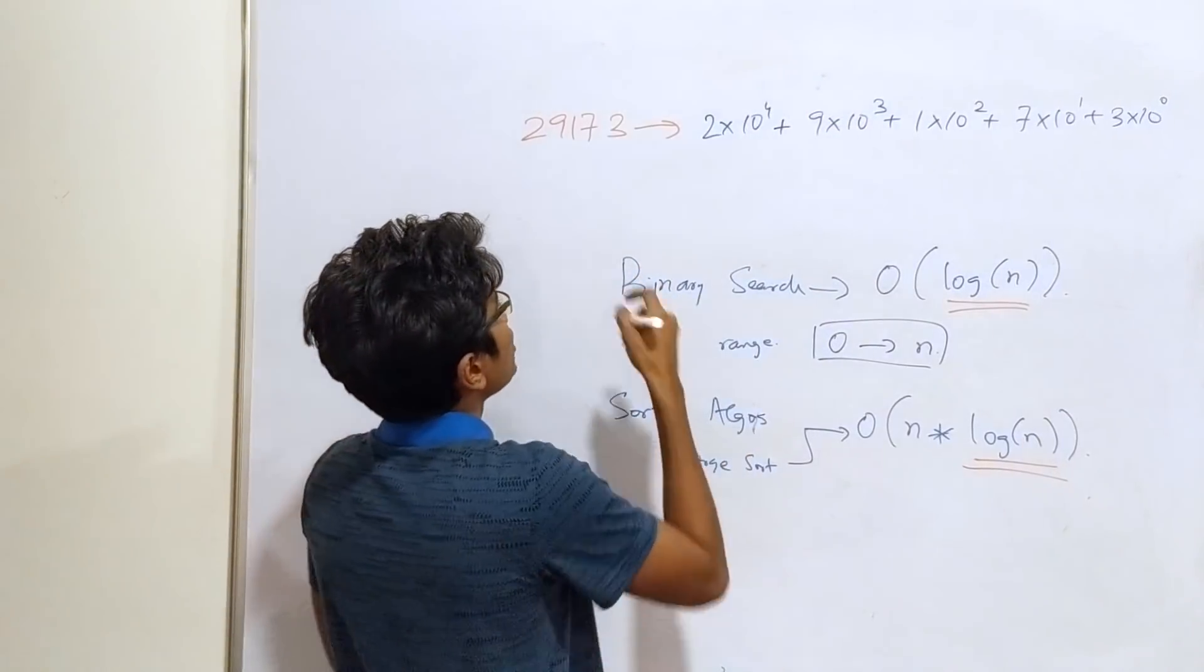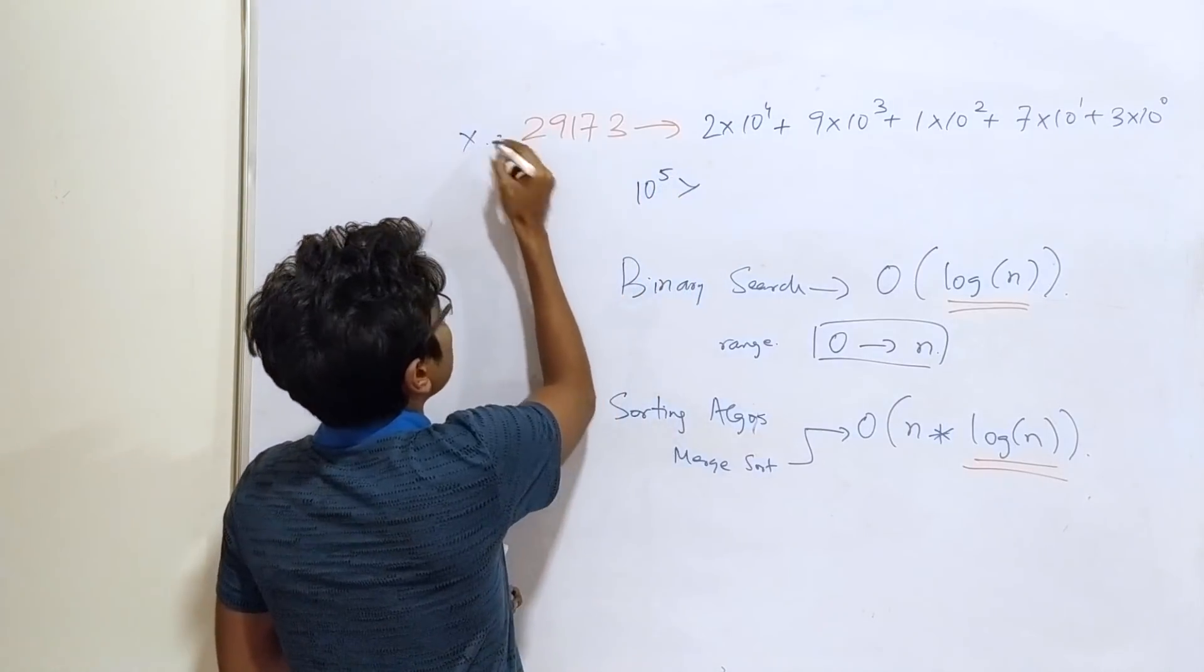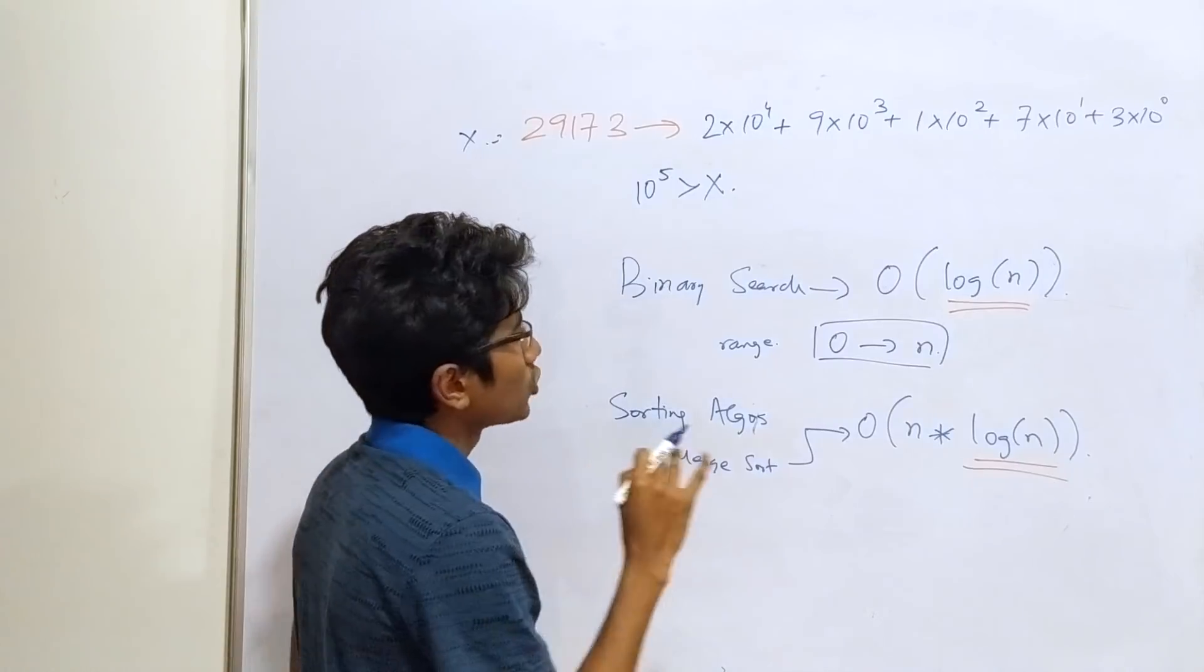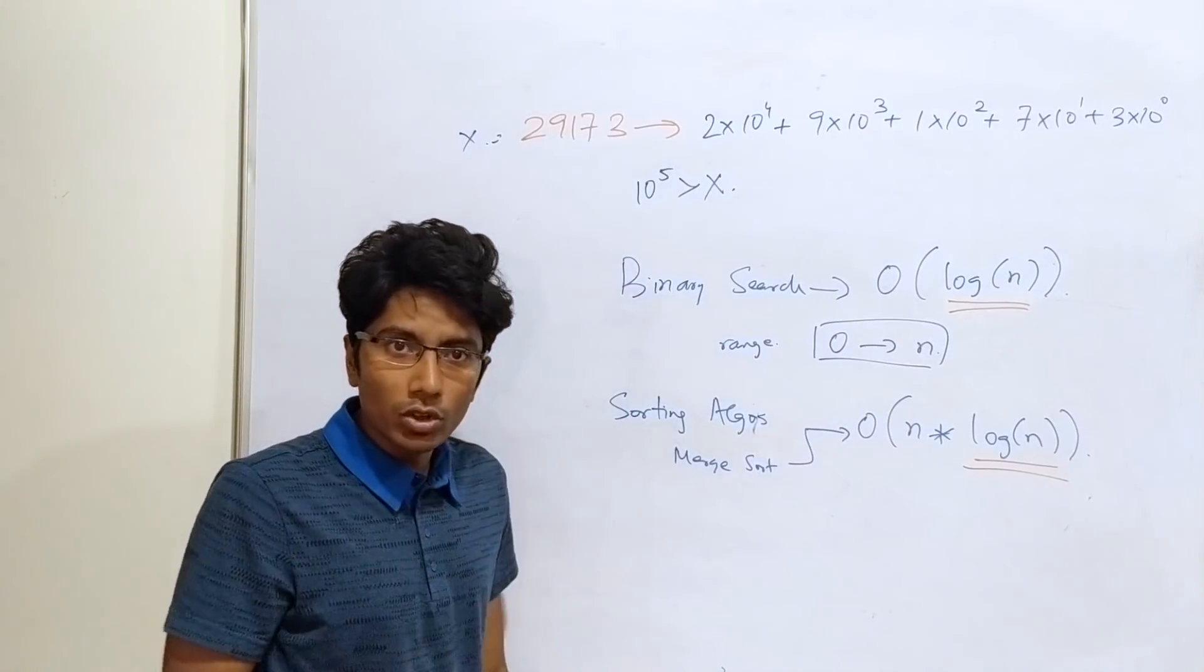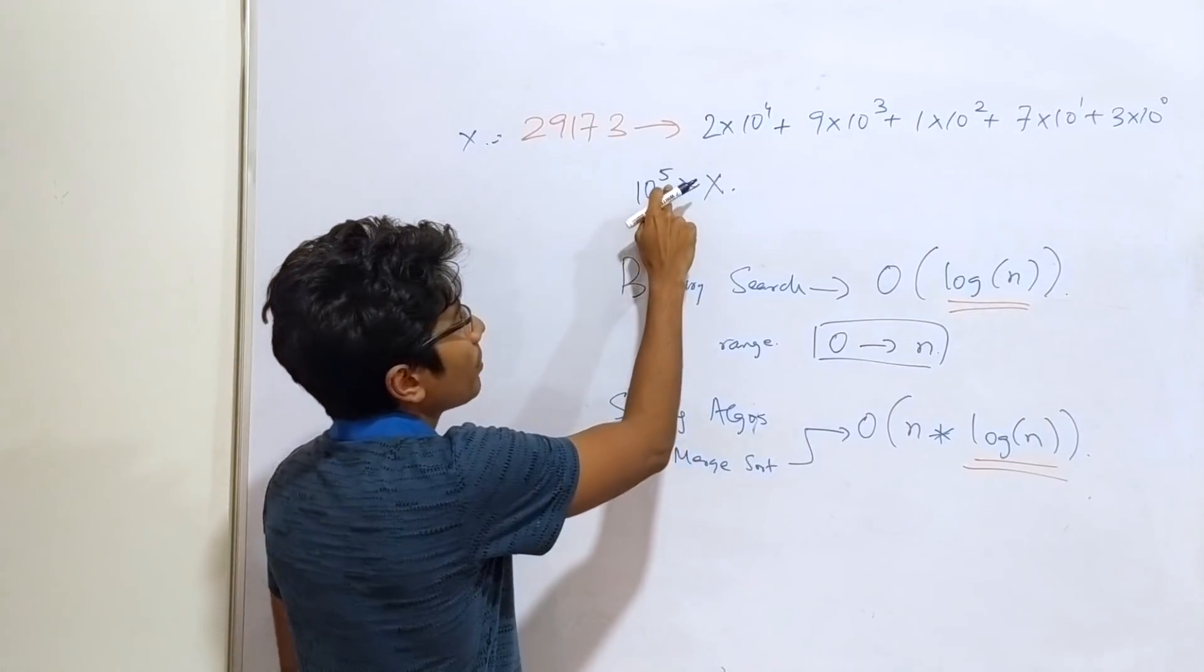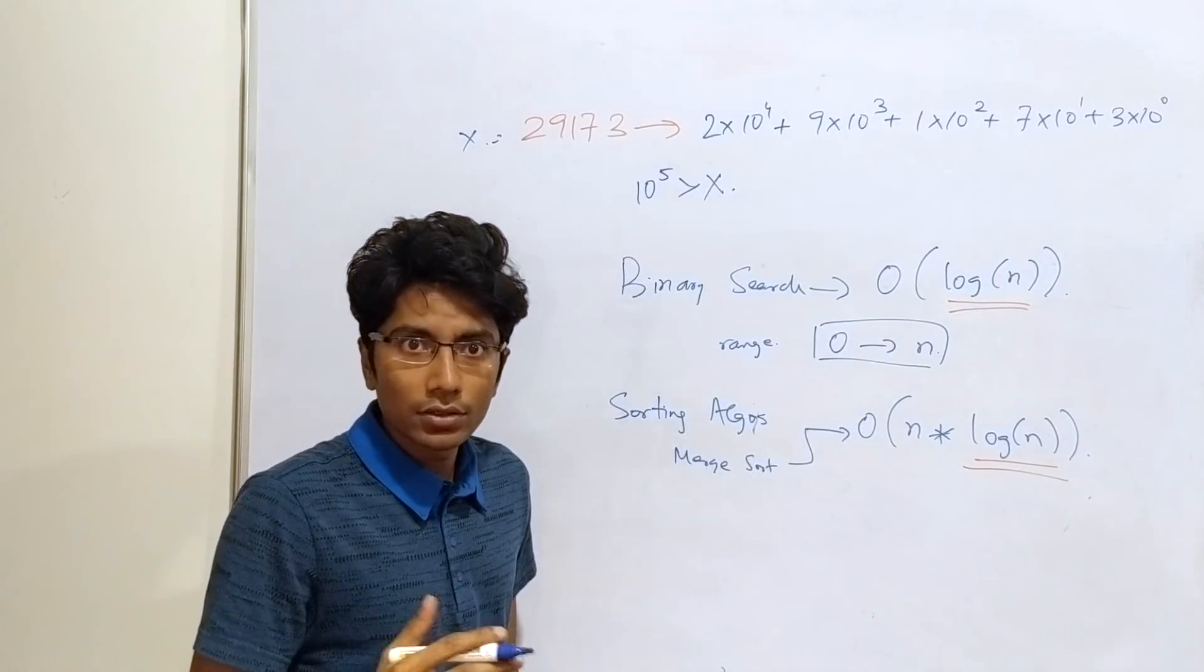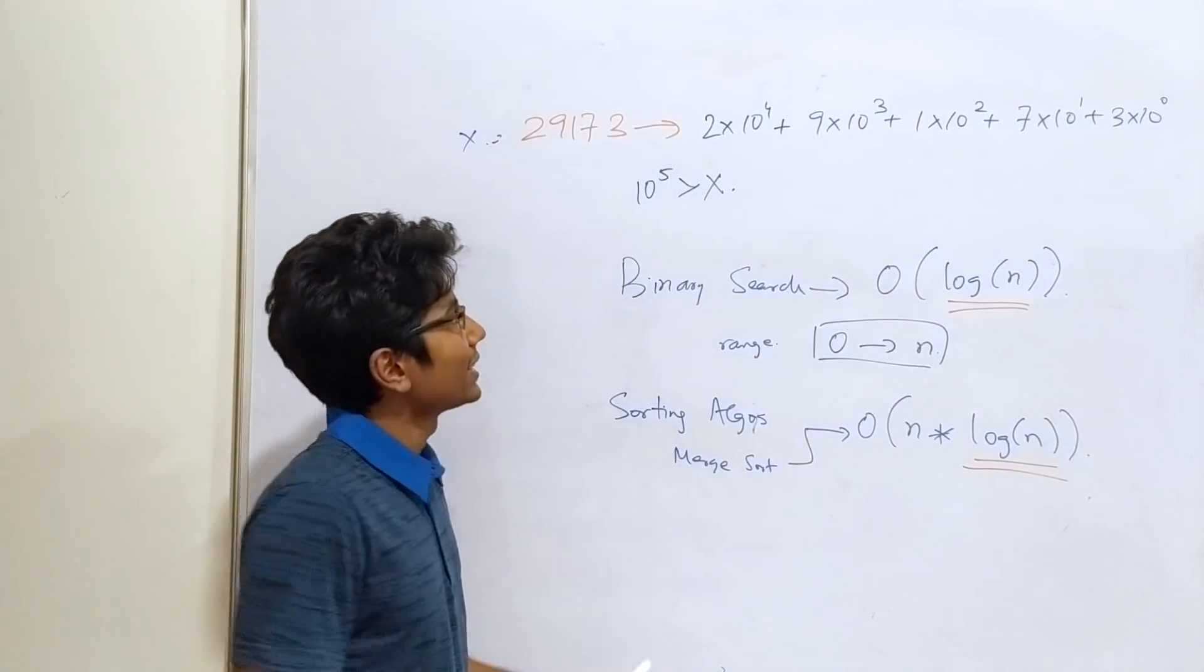Right? This number is smaller than 10 raised to the power 5. If you call this x, then 10 raised to the power 5 is greater than x. And so what we can say is that the number of digits you need to represent a number in decimal is going to be the maximum exponent slightly greater than the number itself. Simply put. Easy. That's it.